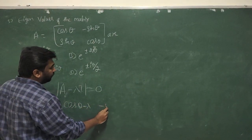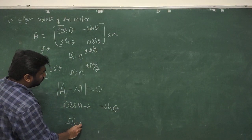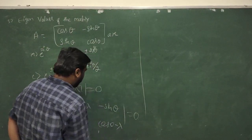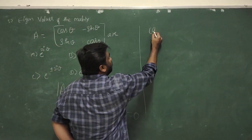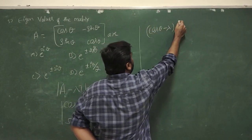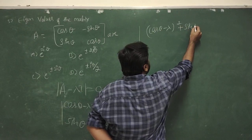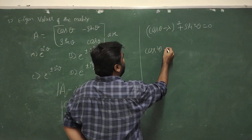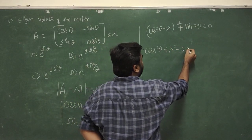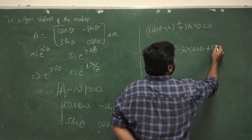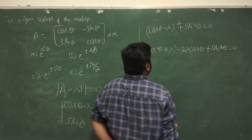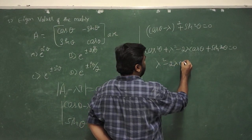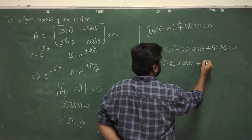Expanding the determinant gives: (cos θ minus λ)(cos θ minus λ) plus sin²θ equals 0. Using cos²θ plus sin²θ equals 1, we get λ² minus 2λ cos θ plus sin²θ plus cos²θ equals 0, which simplifies to λ² minus 2λ cos θ plus 1 equals 0.